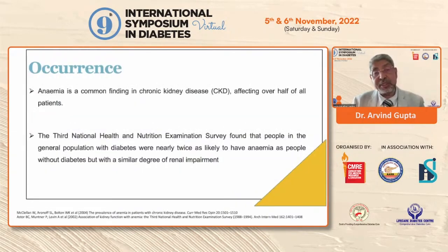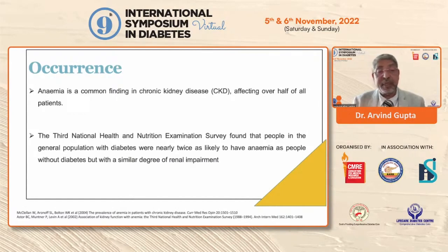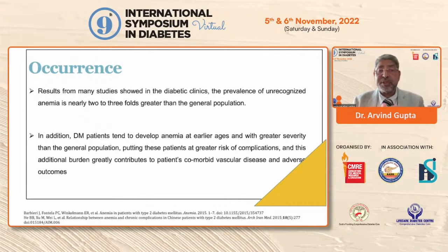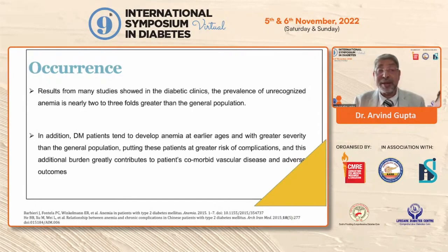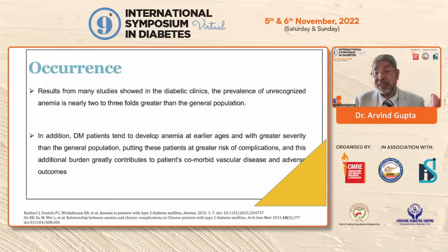We know that if a patient is having both chronic kidney disease and diabetes, anemia is a very common feature. The third NHANES survey found that people in the general population with diabetes were nearly twice as likely to have anemia as people without diabetes. Results from several studies have shown that the prevalence of unrecognized anemia in diabetic clinics is nearly two to three times greater than in the general population, and these diabetic patients tend to develop anemia at earlier ages and with greater severity.